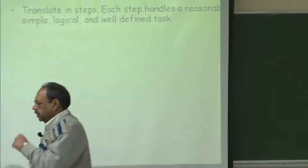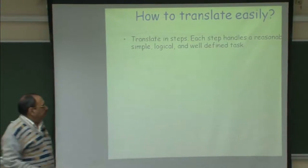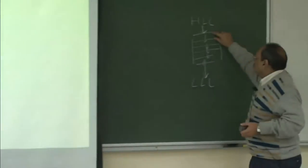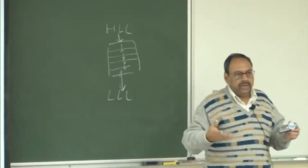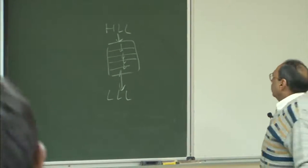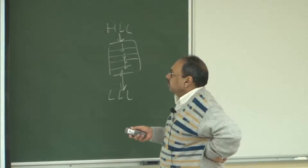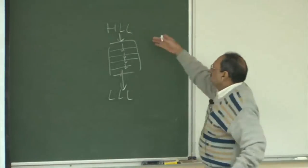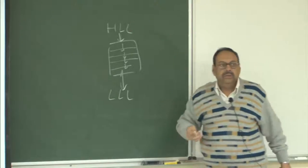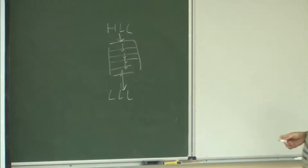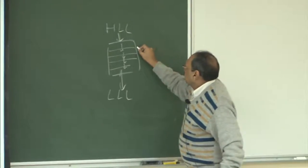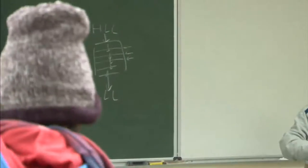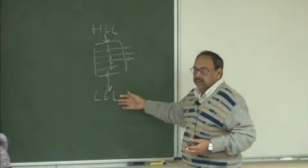We don't want to do translation in one step but want to take small steps at a time, moving across these small steps. We need to understand what these small steps are, and if we can figure out each of them, we'll be able to understand how the compiler works. So we want to translate in steps, making sure that each step is doing some coherent activity which is logically isolated to one phase, helping us in development and debugging.